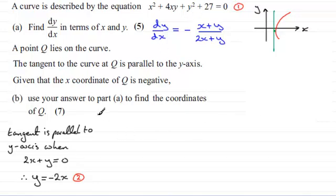So if we just border that off, I'm going to substitute equation two into equation one. So therefore we're going to have x squared plus 4x multiplied by y, y being now minus 2x, and then plus y squared so that's now going to be (minus 2x) all squared plus the 27 and that equals zero.